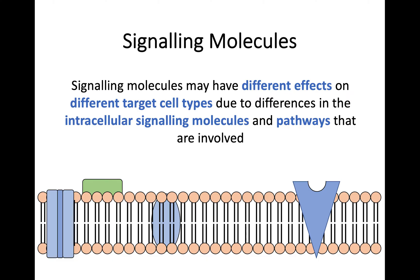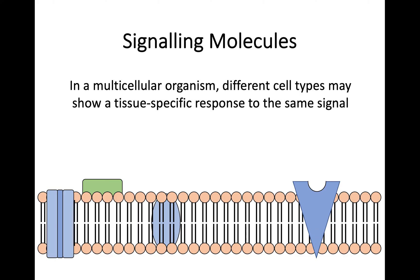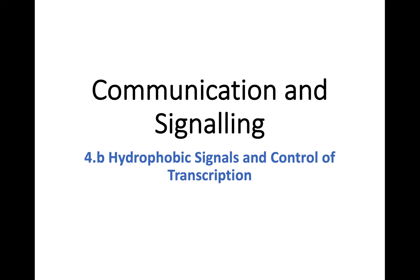The signaling molecule binding to a receptor molecule inside that cell might trigger a different pathway, stimulate different molecules, or initiate a different pathway, resulting in different responses depending on the different cell types. In multicellular organisms, different cell types may also show a tissue-specific response to the same signal — some tissues will react in a certain way to a signal, but a different tissue may respond differently.